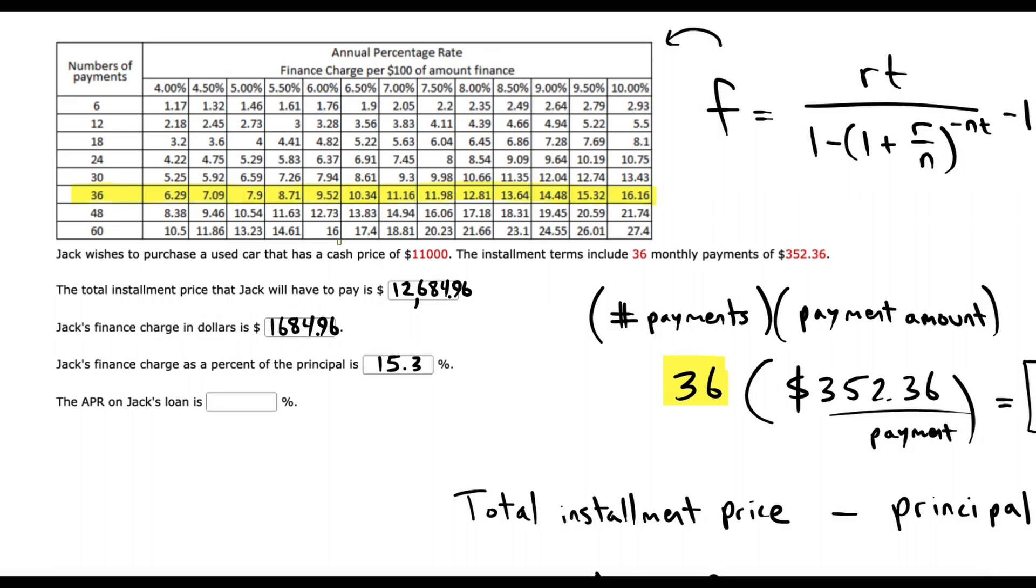Then we would want to go to a value of 15.3 if we can find it. And yeah, right there is 15.32. And we'll see what column that came from. It came from an APR of 9.5.